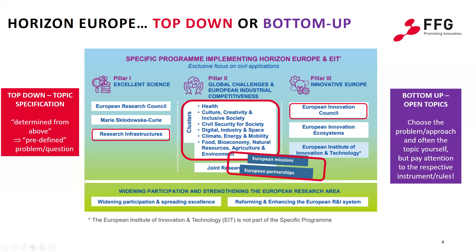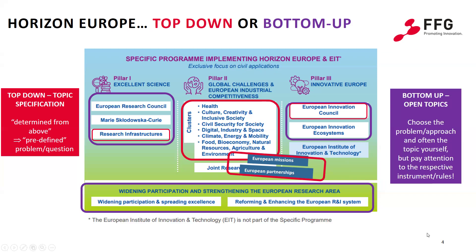In contrast, the bottom-up calls are thematically open, so you as the applicant can choose the research area yourself. Of course, you still have to follow the rules and conditions of the respective funding instruments. Bottom-up calls are mainly found in pillar one, excellence programs, and in pillar three, for example in the European Innovation Council. Another important distinction is whether the programs are open to individual applicants or whether collaborative projects are mandatory, meaning that consortia of multiple European partners must submit proposals. You can find more information on this in our online information package.